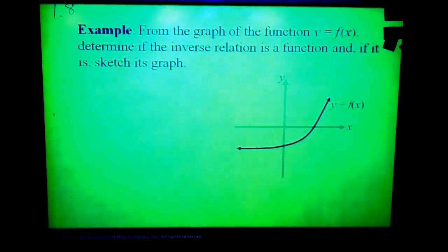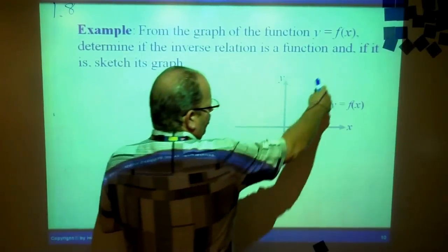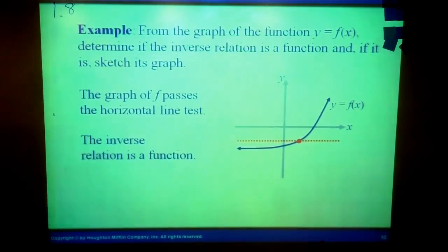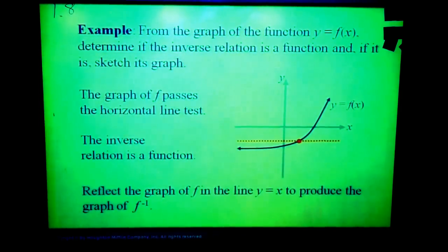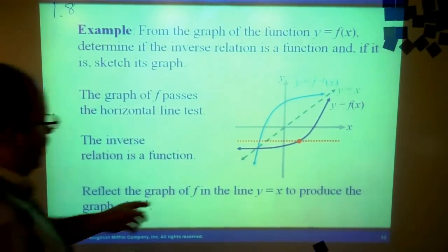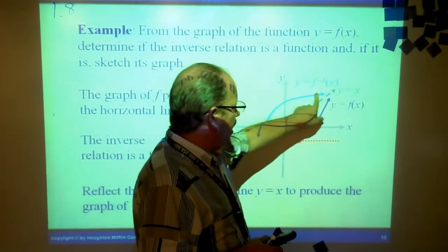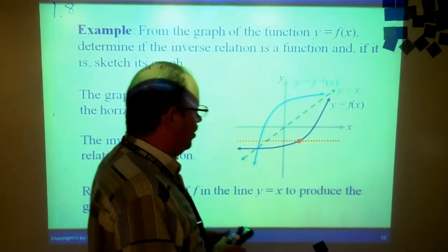Another example: from the graph of the function, determine if the inverse relation is a function, and if it is, sketch its graph. So the inverse relation, remember, we draw our line and we flip it over. Will it be a function? Well, we know that it starts out as a function. We reflect the graph. And we look at this. Does this one now, the inverse, does that pass our vertical line test? Well yeah. If it passed our horizontal line test before we flipped it, then it's going to pass a vertical line test afterwards.